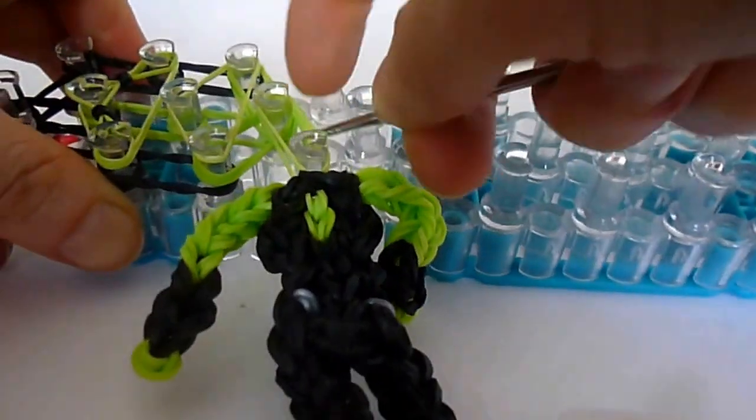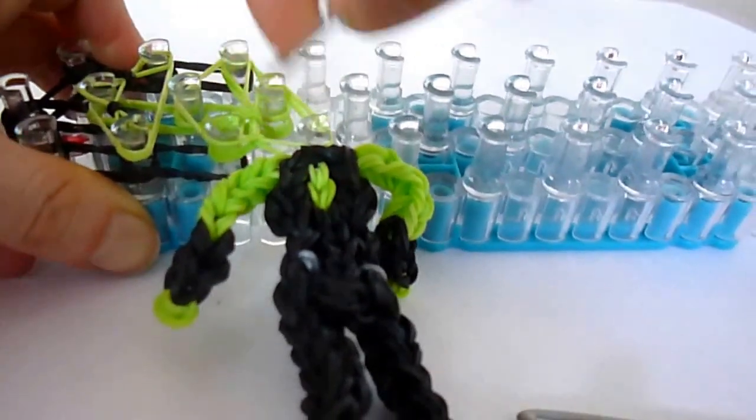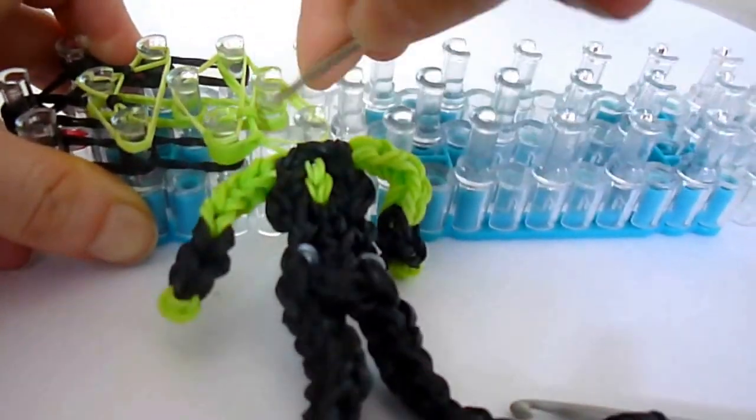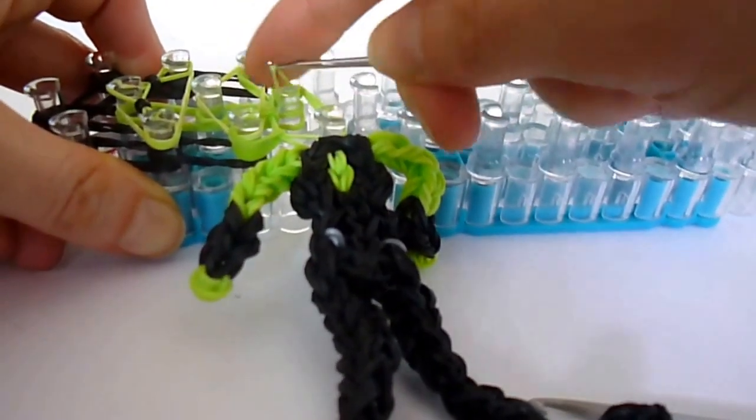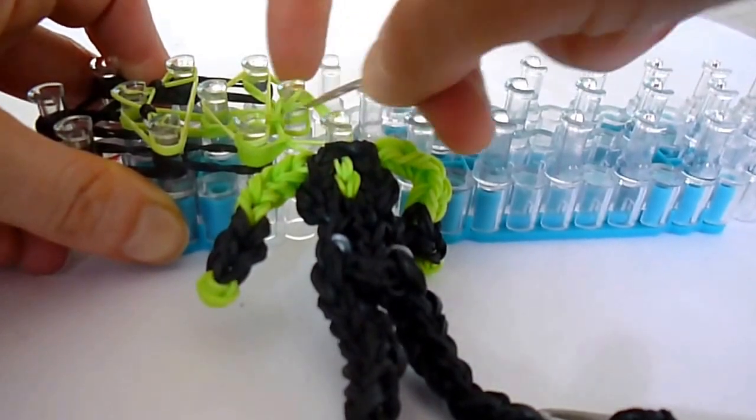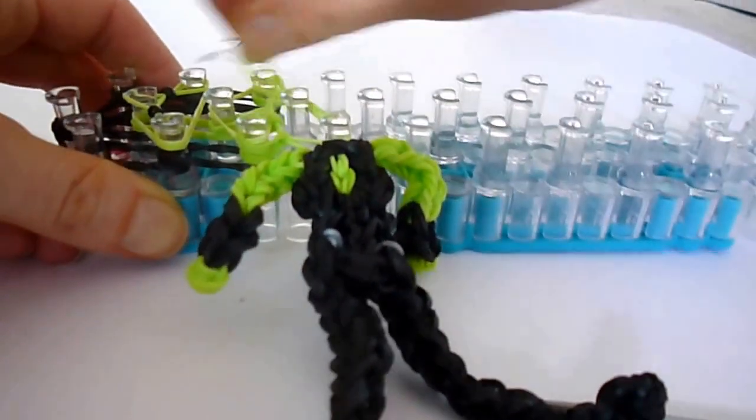Get your hook and we're going to loop once up to the side. Take the top two, bring them left. Press it down a little. Take the next top two and bring them to the right. And then we can loop up twice in the middle.